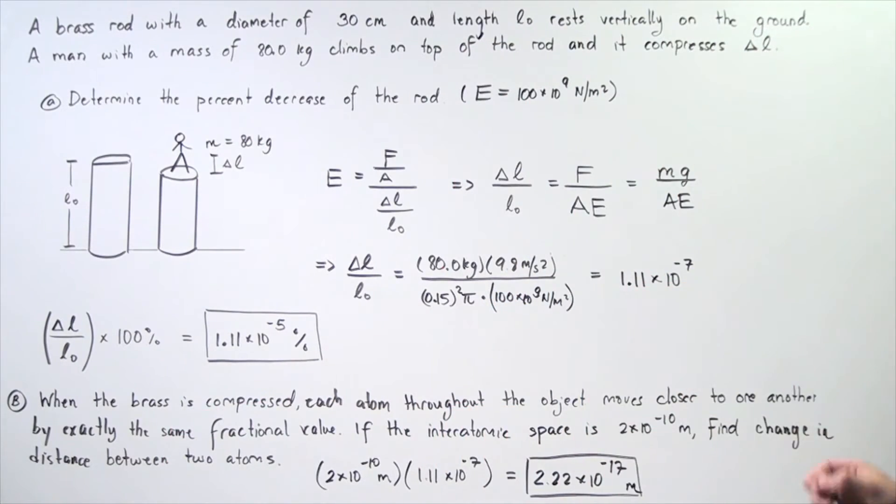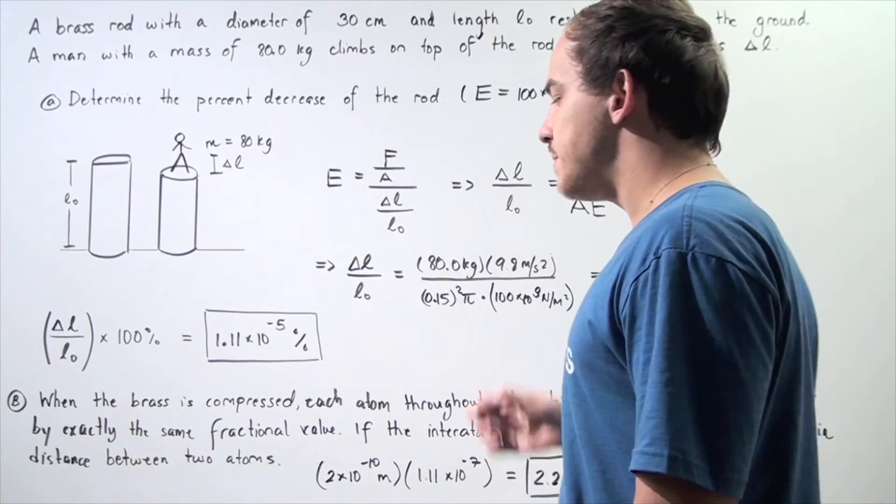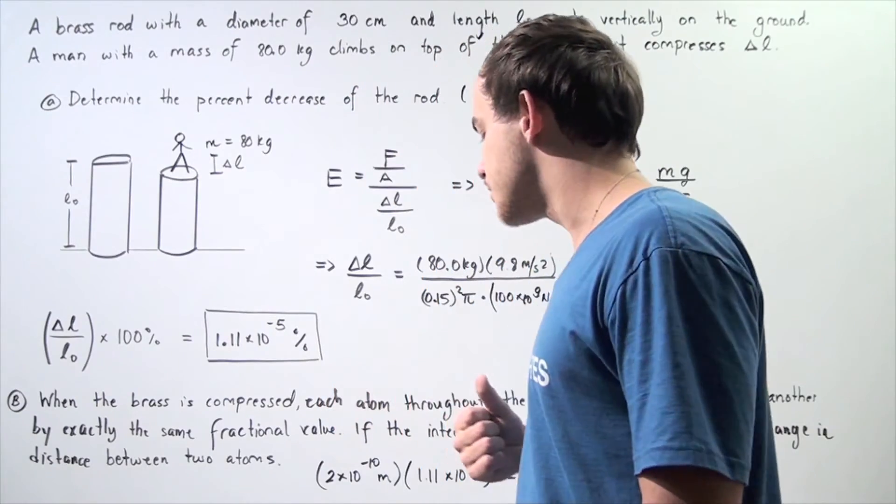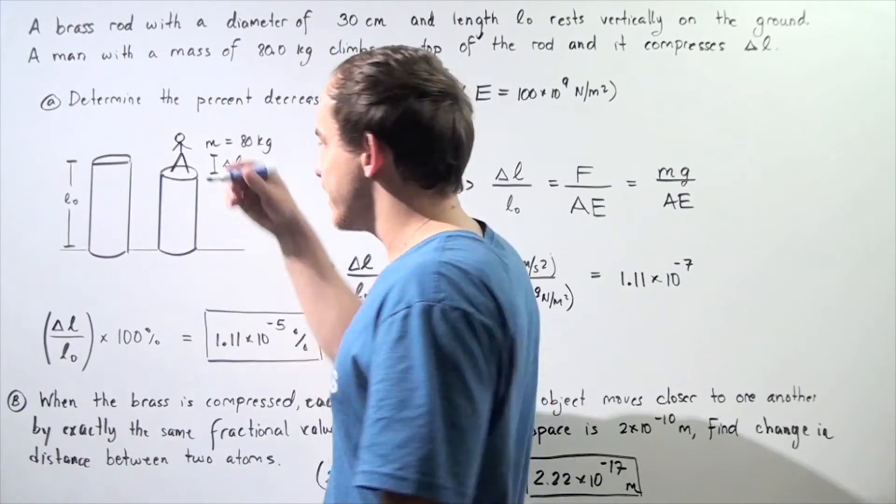Now, if the interatomic space between any two atoms is initially 2 times 10 to the negative 10 meters, find the change in distance between any two atoms after our object compresses. So, let's suppose before the object compressed,